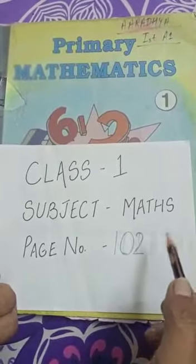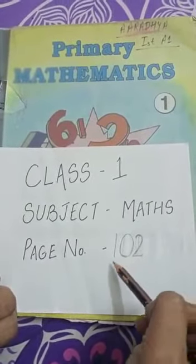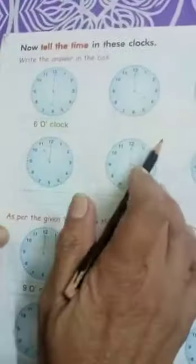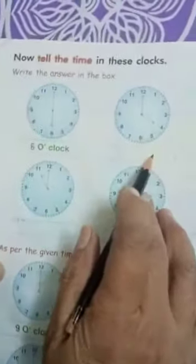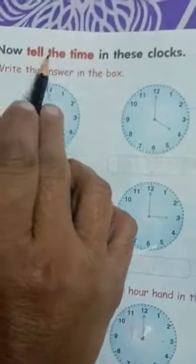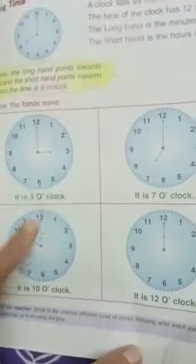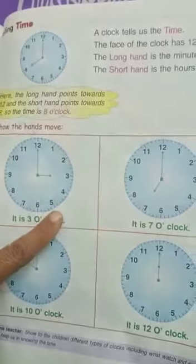Good morning students. Take out your math book, page 102. This chapter is about time. Now tell the time in these clocks. I hope you all have revised this. You all have revised this, so now you can do this page yourself.